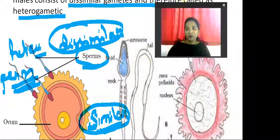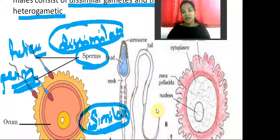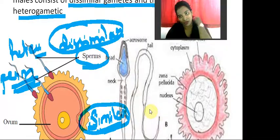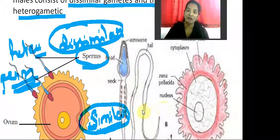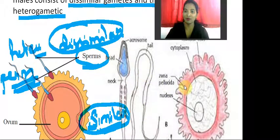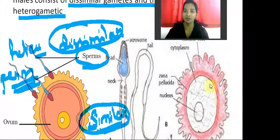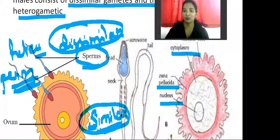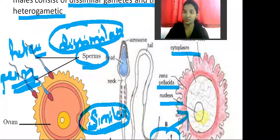Have a look at the sperm structure. It looks like a snake but it is a microscopic structure — we cannot see it with the naked eye. With the help of a tail, the sperm is able to move from the vagina to the ovum. The ovum cannot move unless there is fertilization or a menstrual cycle. The cytoplasm, zona pellucida, and nucleus are present, and the sperm comes into contact with this, so fertilization takes place.